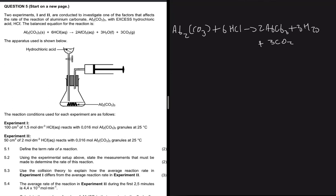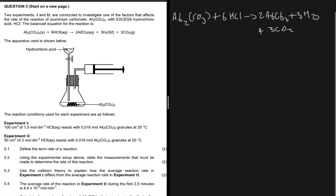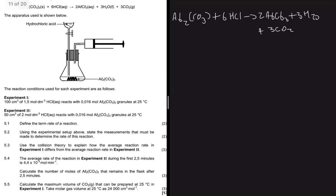In the setup shown, the hydrochloric acid is added slowly and the aluminium carbonate is at the bottom. There is also a syringe. One of the products is a gas, so all the gas released as the reaction takes place will end up in the syringe. We are given information for both experiment one and experiment two.